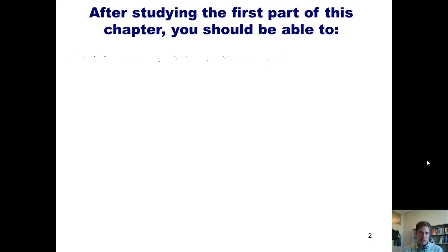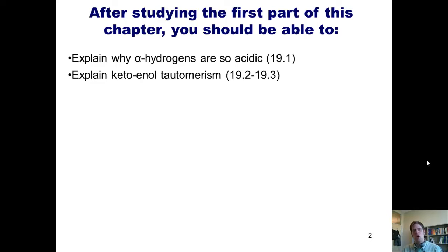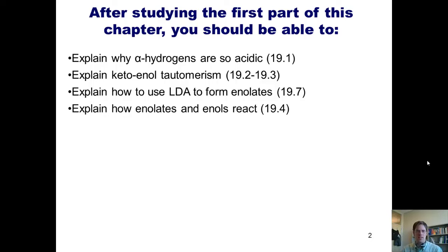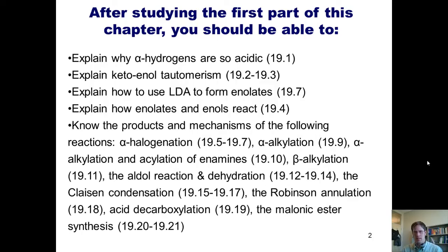By the end of this chapter, you should be able to do the following: explain why alpha-hydrogens are so acidic, explain keto-enol tautomerism, explain how to use LDA to form enolates, explain how enolates and enols react, and know the products, reaction conditions, and mechanisms of this list of reactions.